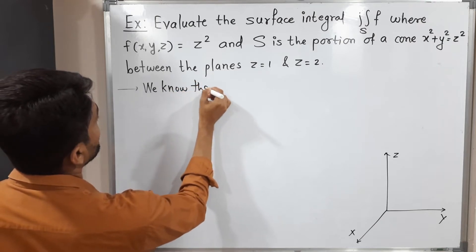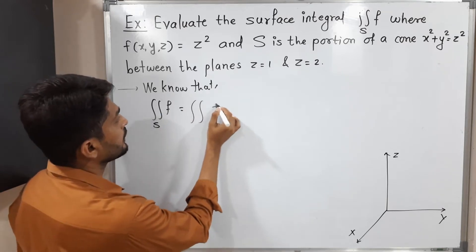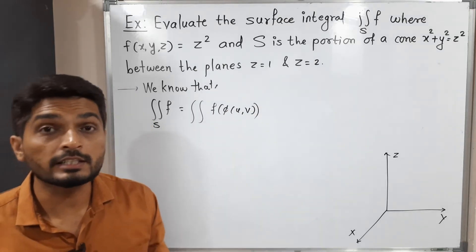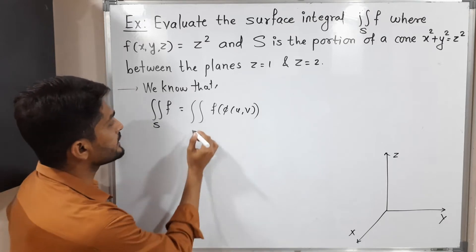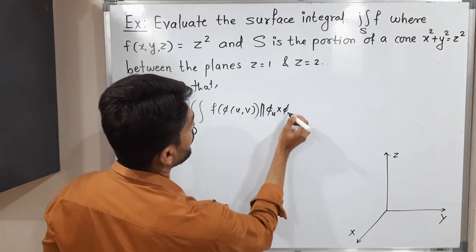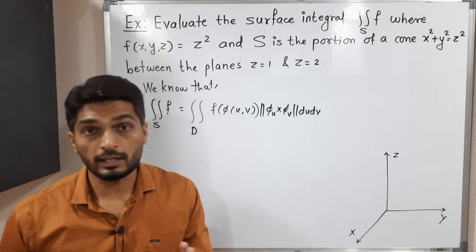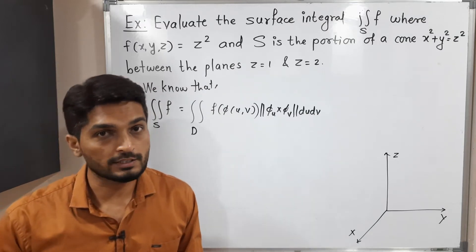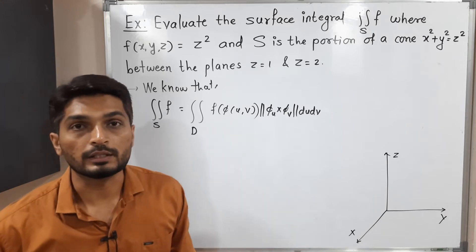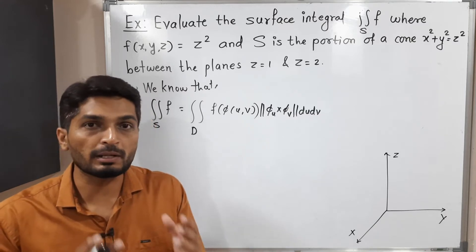We know that the double integration of F over S. Its definition is the double integration of F of phi of uv, where phi is a parametrization of surface S defined on domain D. So we solve this double integration on domain D, and we have norm of phi_u cross phi_v du dv. This is the definition of surface integral of a scalar field. For that we need to have the parametrization of a surface, its partial derivatives with respect to u and v, their cross product norm, and F of phi of uv. After getting all those values, we put them here and by solving the double integration we will have the answer.